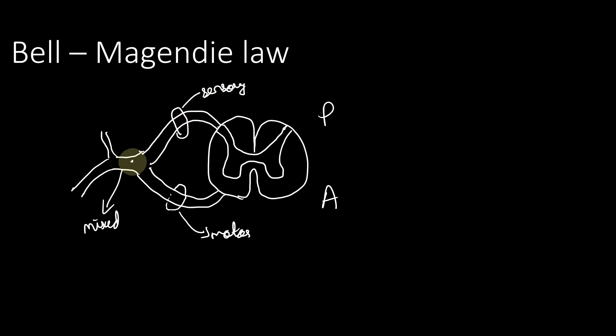Both of them together form the trunk of the spinal nerve which divides into ventral ramus and the dorsal ramus. All these are mixed but here you have exclusively motor fibers and here you have exclusively sensory fibers.